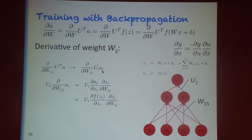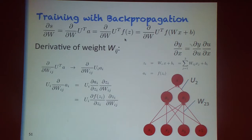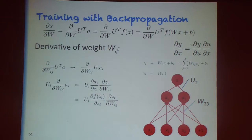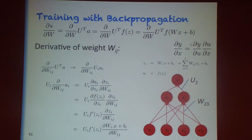We then work out the derivative of a_i with respect to w_{ij}, where a_i is the result of f(z). We apply the chain rule: the derivative of f(z) is the derivative of f with respect to z times the derivative of z with respect to w_{ij}. The derivative of f is the derivative of a logistic function, which we know.